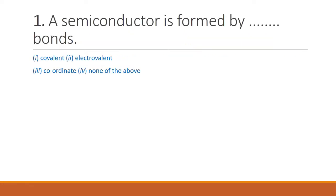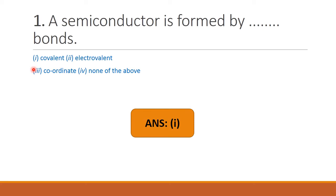Now let us discuss some important multiple choice questions. First question: a semiconductor is formed by dash bonds — option 1 covalent, option 2 electrovalent, option 3 coordinate, option 4 none of the above. A semiconductor is formed by covalent bonds, therefore option 1 is the right answer.